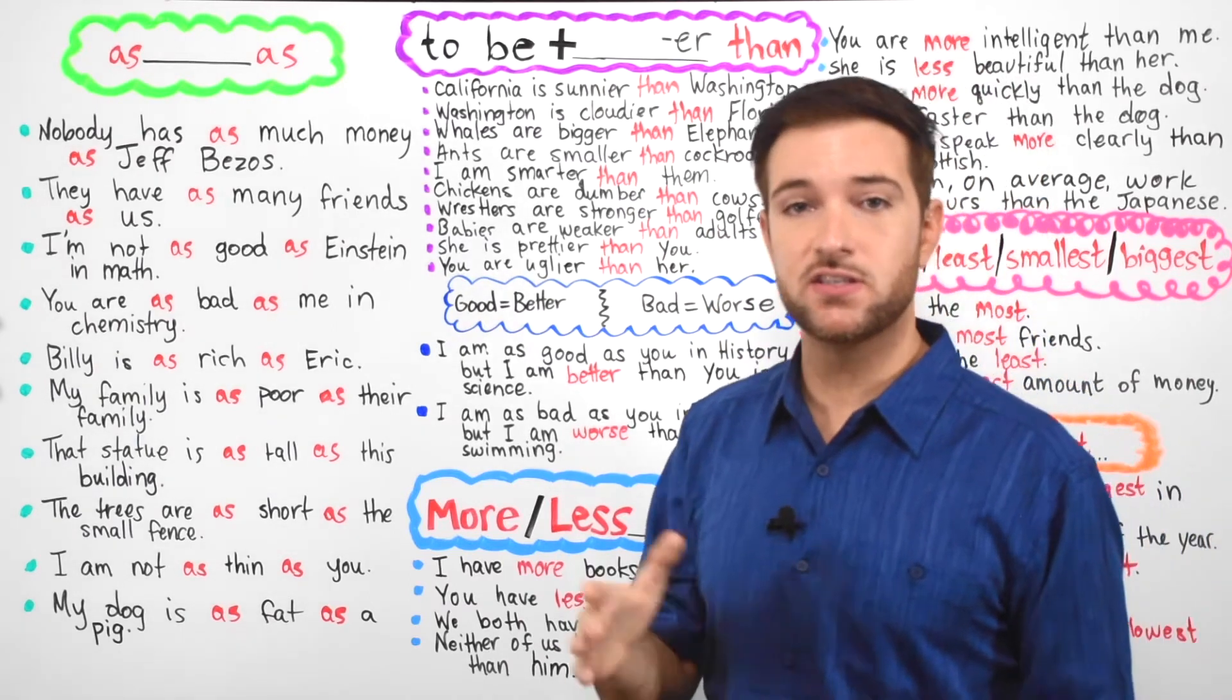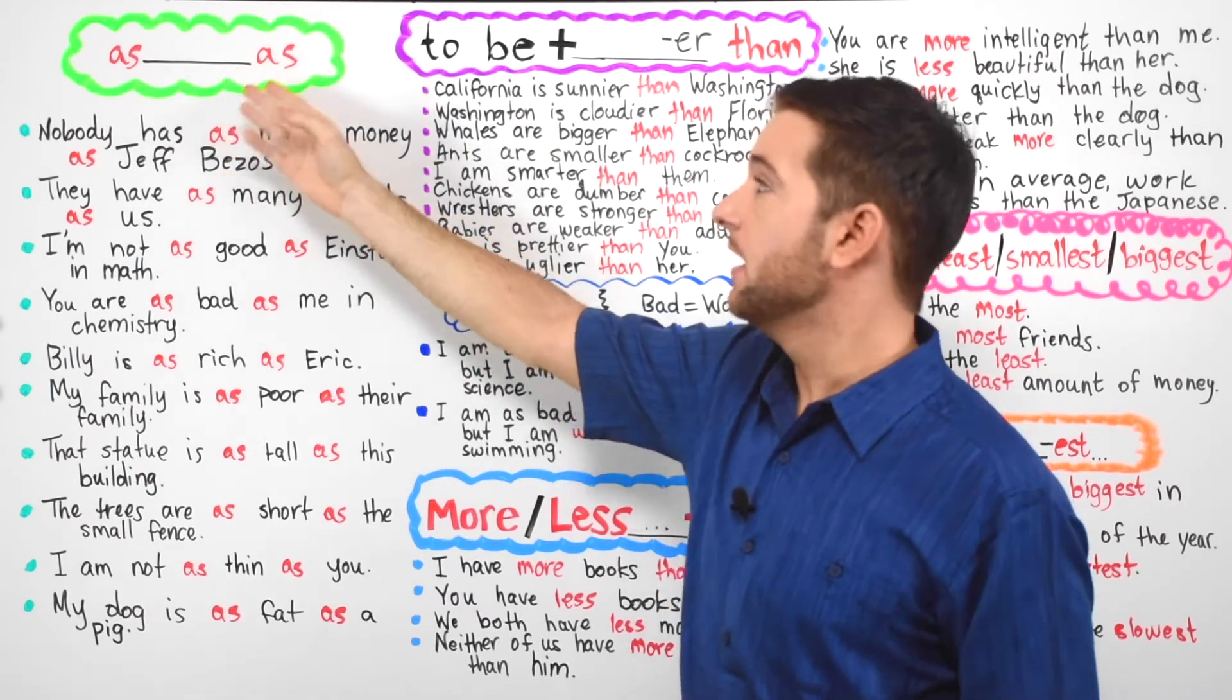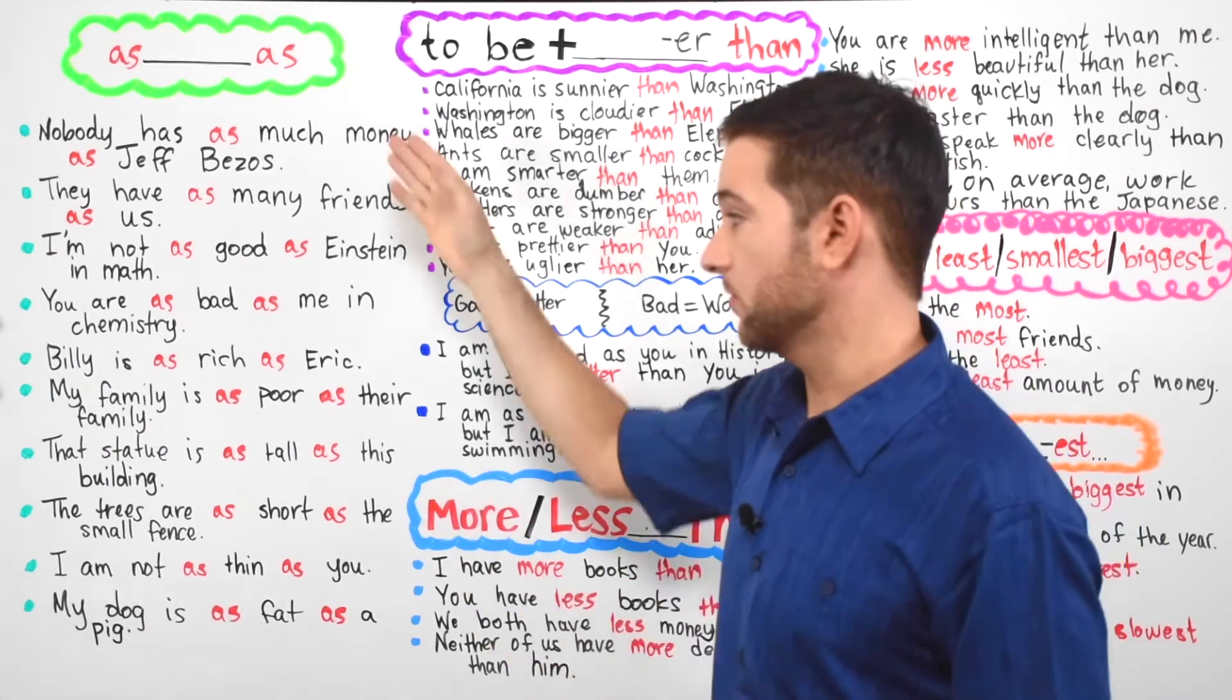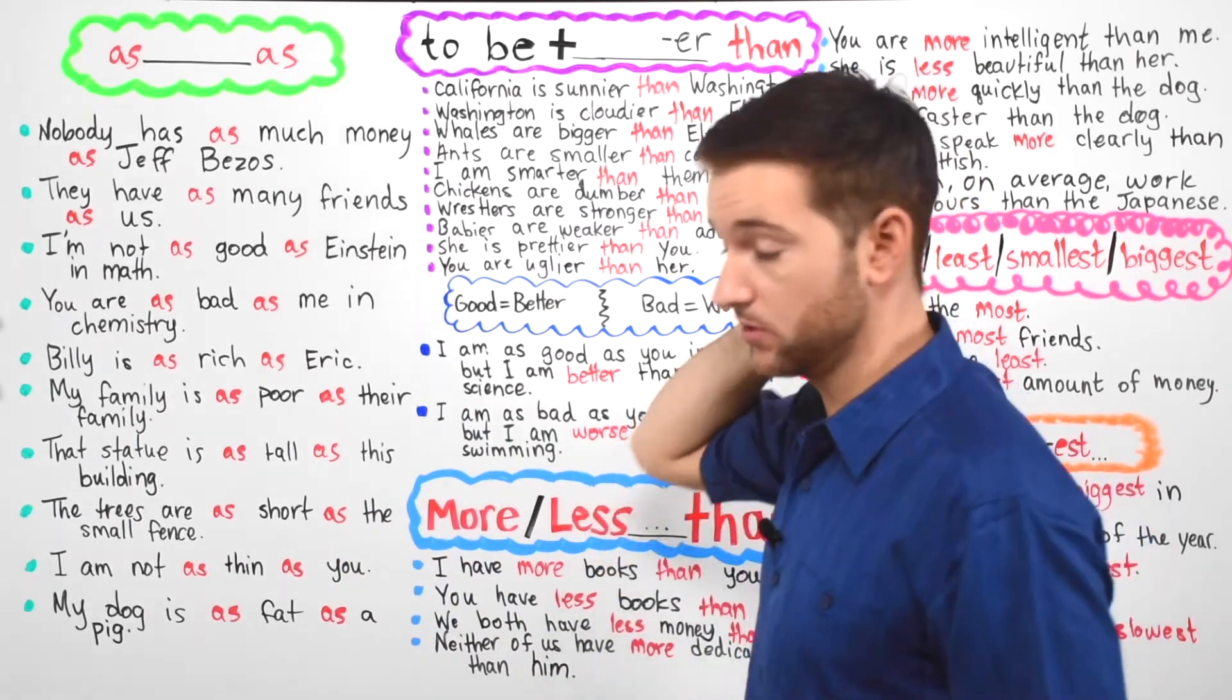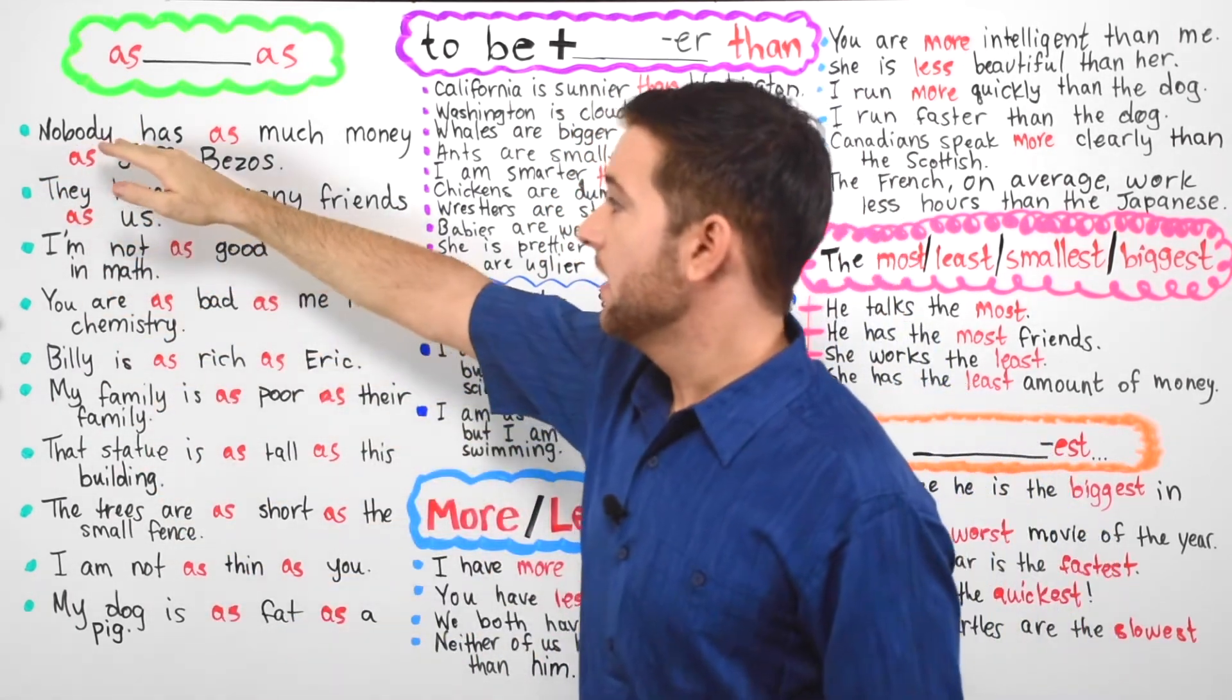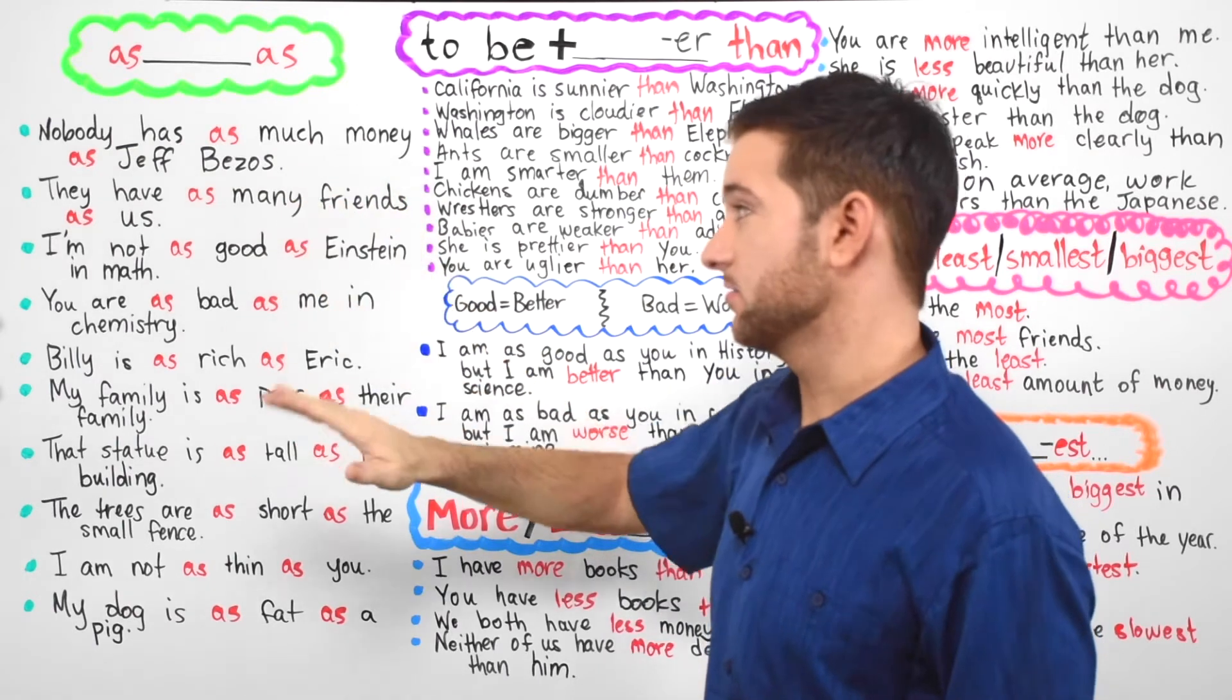So basically guys, to make a comparison in English, you need to use as and then you have a space here. You're going to put words here. And in the blank spot, you're going to put either quantifiers or adjectives like you see in the list right here with all these examples. So let's take a look at a few examples using the words from the list. Nobody, not a single person, no one in the world, has as much money as Jeff Bezos. So meaning nobody has as much money as Jeff Bezos.